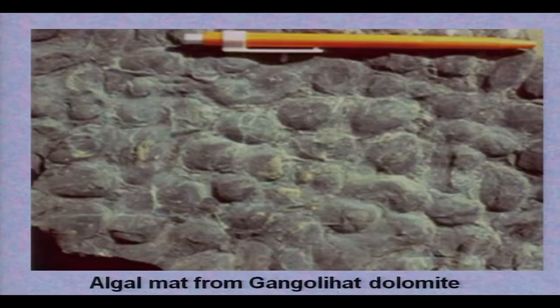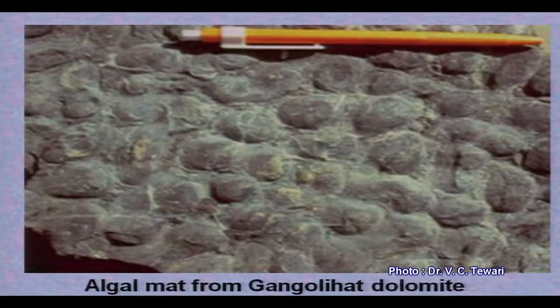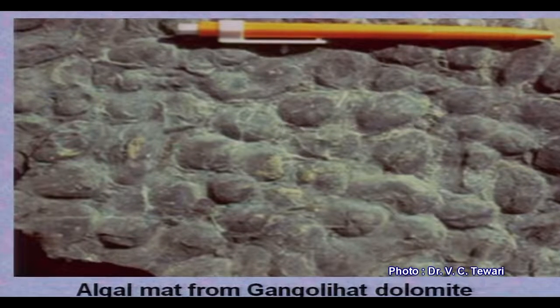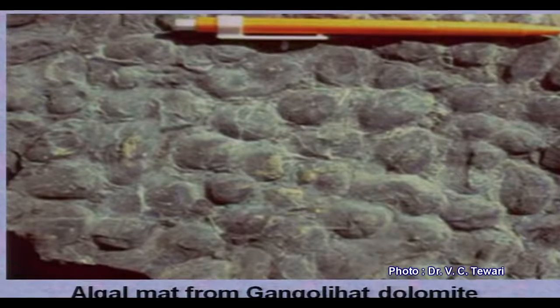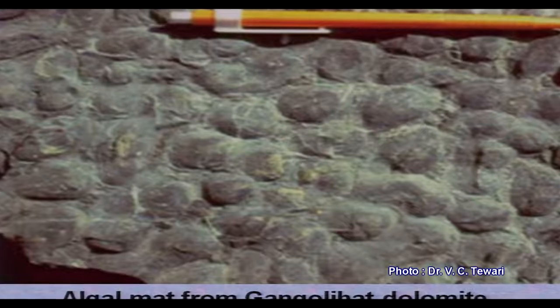In this program we will discuss about micro and mega fossils found in the Himalaya. Here we have an algal mat — as you know, algae is a green color plant, very low in ranking. When they combine together and are converted into fossil, such a mat-like structure is formed. You can see the size of these algae.